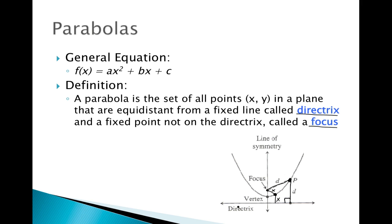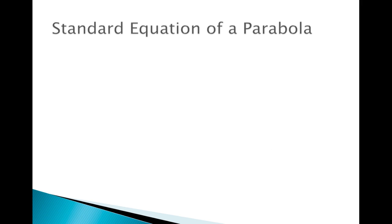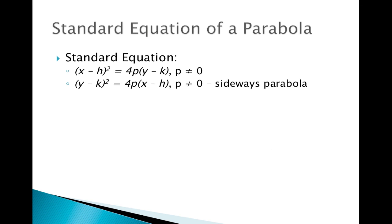Now let's take another look at the equation of a parabola. The standard equation for a parabola is (x minus h) squared equals 4p times (y minus k). We also have it in a flipped form where the y part is squared: (y minus k) squared equals 4p times (x minus h). This second form is your sideways parabola.